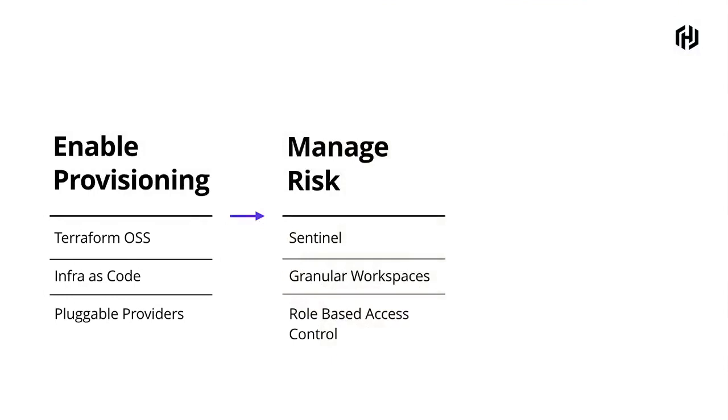There's one more thing in this ecosystem I want to talk about. The initial goal of Terraform was enabling provisioning — with the open source tool, infrastructure as code as a philosophy, and a pluggable extensible set of providers. From there it opens up new problems: how do I manage the risk of this? Now I have people provisioning infrastructure in the cloud doing whatever they want — how do I make sure that doesn't mean open firewall rules or deleting core networks? This becomes a multifaceted approach: role-based access controls, granular workspaces to reduce risk, and Sentinel and policy as code to define a sandbox. How do we lower the risk that things we don't want to happen actually happen?